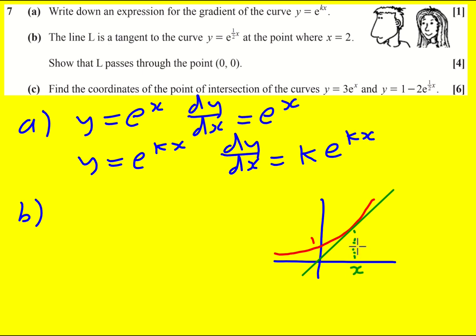I want to show that it goes through the origin. It looks like it does, but I need to prove it. First things first, let's find the equation of that line. To do that, I need the gradient of the line and the value of y, because I've got the value of x, which is 2.